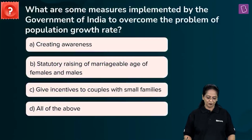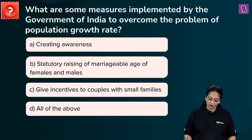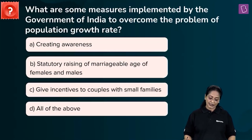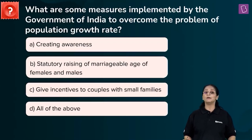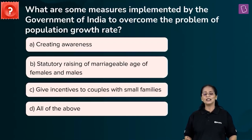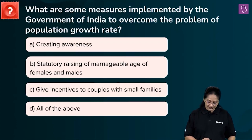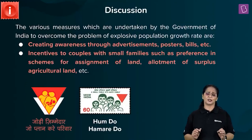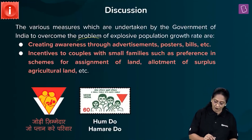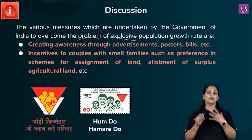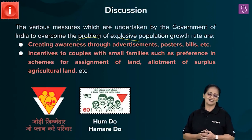A new question: What are some measures implemented by the government of India to overcome the problem of population growth rate? A. Creating awareness. B. Statutory raising of marriageable age of females and males. C. Give incentives to couples with small families. D. All of the above. The government of India has adopted various measures to overcome the problem of explosive population growth in our country.